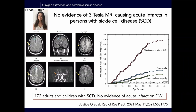We use imaging to study this. There has been some resistance to MRI in sickle cell disease patients based on a 1986 paper in Investigative Radiology suggesting hemoglobin S red cells align in a magnetic field and could cause steno-occlusion. We had an undergraduate student, Olivia Justice, look at this across 172 patients, examining acute DWI lesions. While chronic lesions increase with age, acute silent cerebral ischemic events in the scanner were zero. There is no evidence to our knowledge that MRI causes strokes in sickle cell disease.